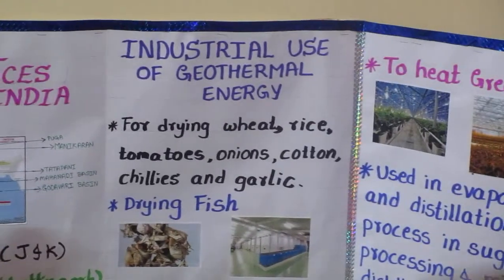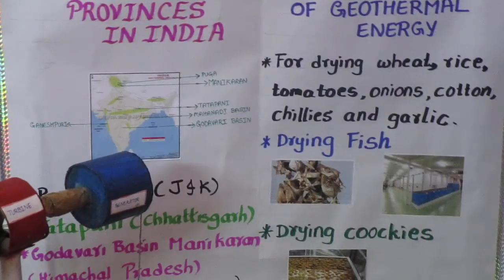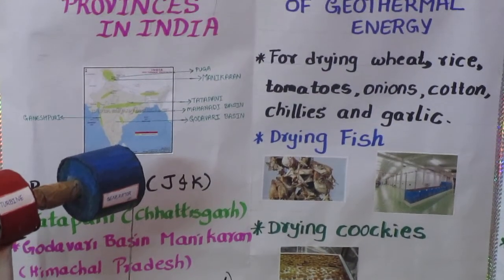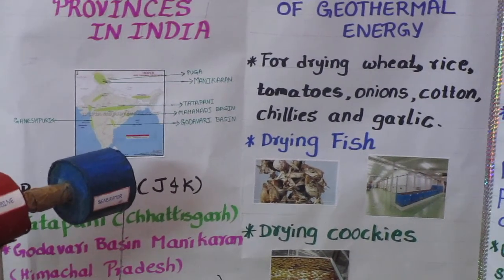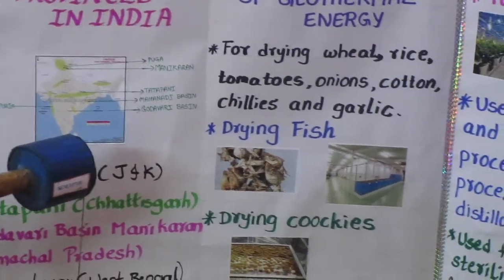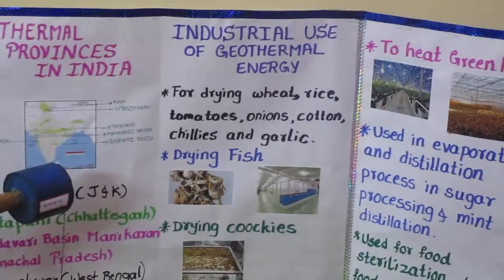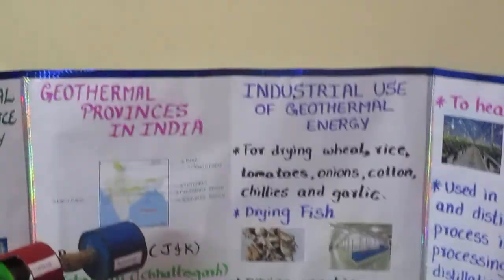Industrial uses of geothermal energy include drying of wheat, rice, tomatoes, onions, cotton, chilies, and garlic.